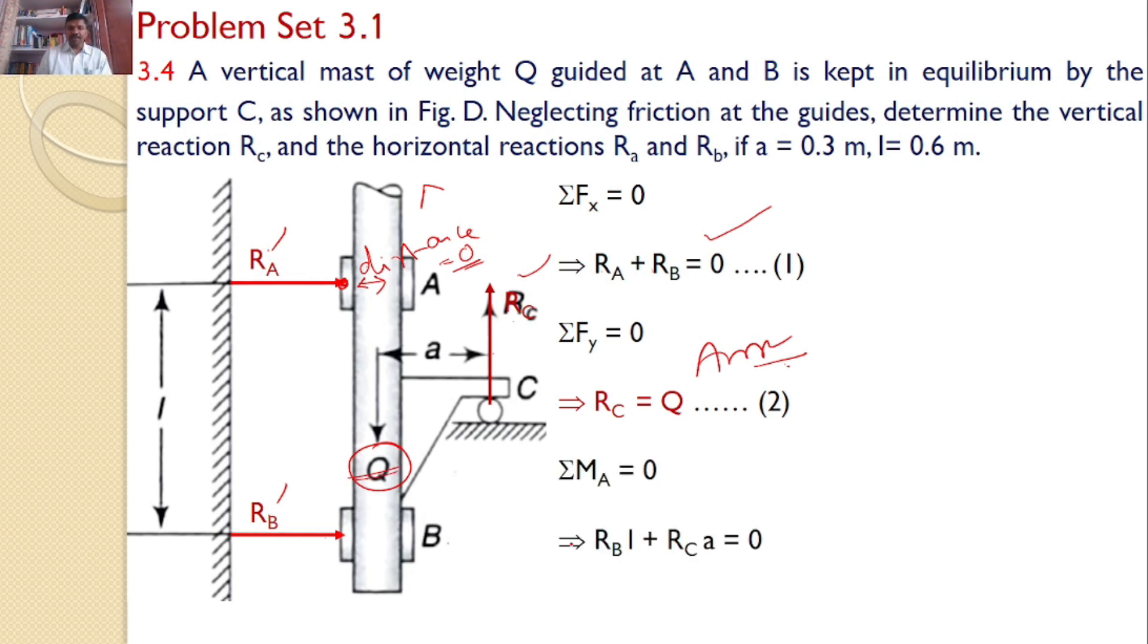By considering sigma Ma equals 0, Rb into the perpendicular distance is L. This will introduce a moment in this direction. And Rc into the perpendicular distance is a, which will also introduce a moment in the same direction. Hence, Rb·L plus Rc·a equals 0. After substituting the corresponding values of L equals 0.6 and a equals 0.3, I got this equation.